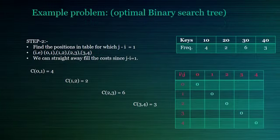Step 2: Find the positions in table for which j minus i equal to 1, i.e., 0,1; 1,2; 2,3; and 3,4.